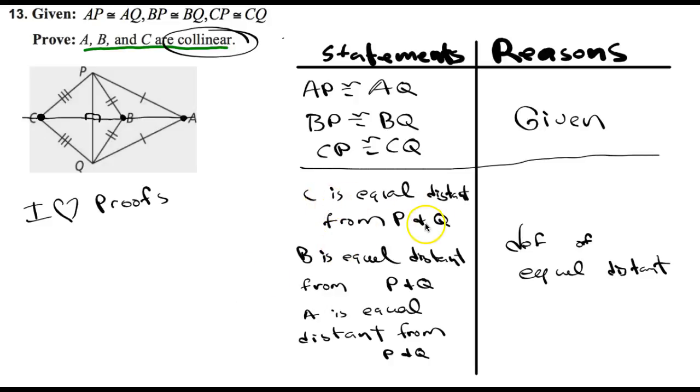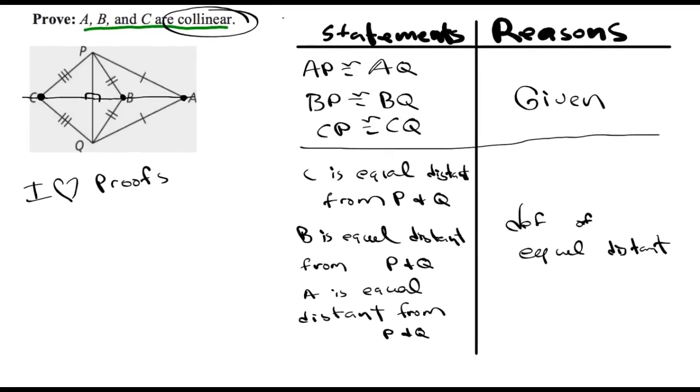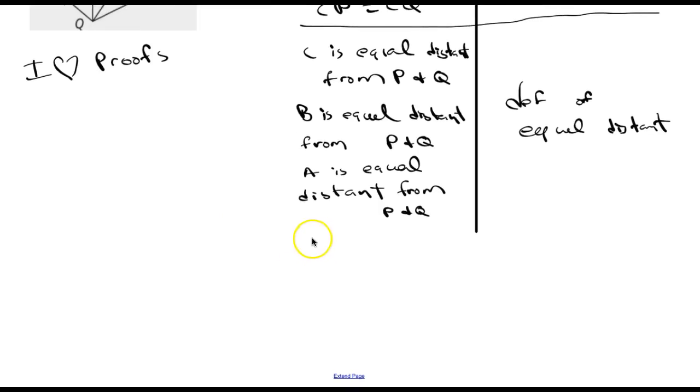I know that C is equal distant from P and Q, B is equal distant from P and Q, A is equal distant from P and Q, and all of these are just definition of equal distant here. So I know that all three points now are equal distant. I'm going to put that all in one line.